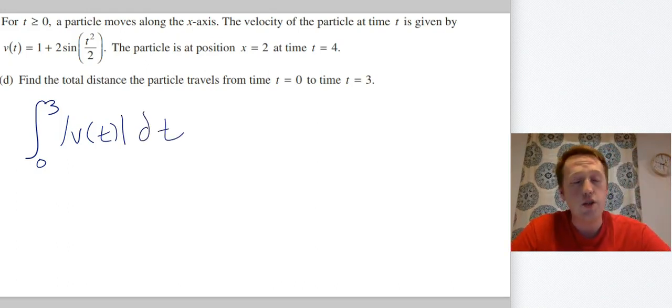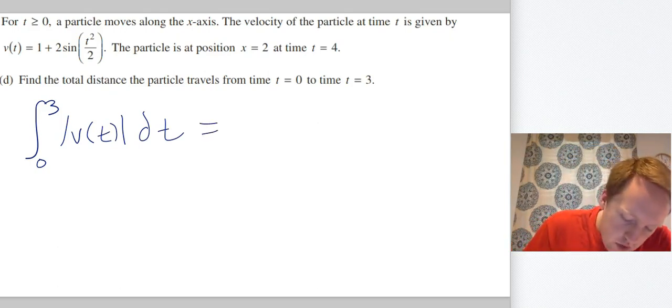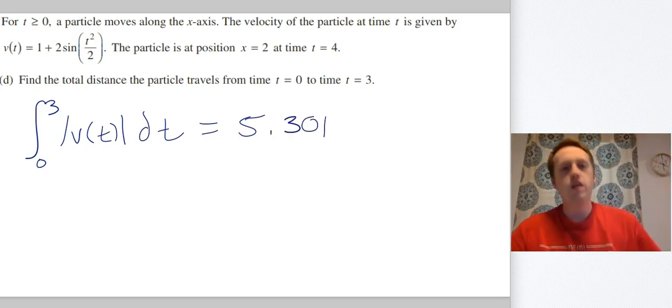This is a calculator question, you're literally going to just do that in your calculator. Just be careful that you remember to put the absolute value bars on there with your calculator. So when you do that you get 5.301.